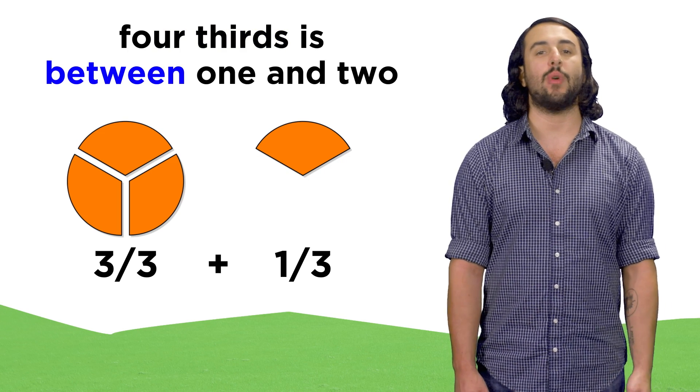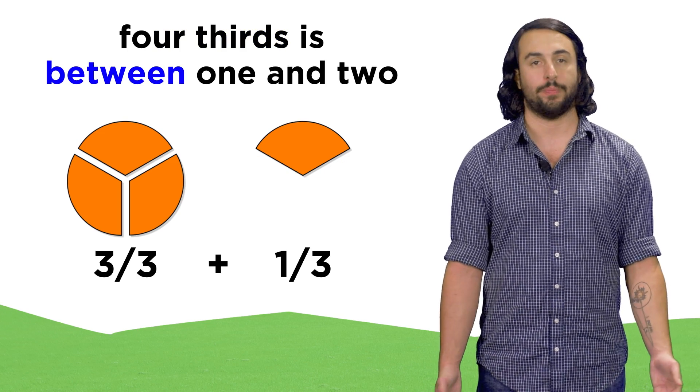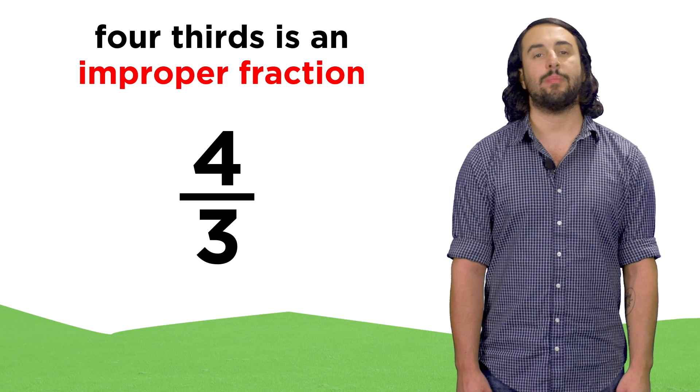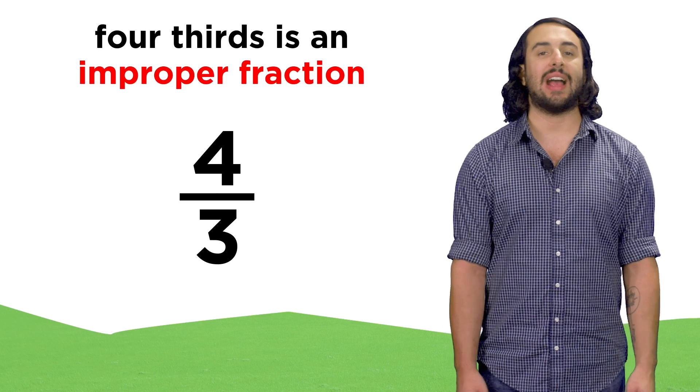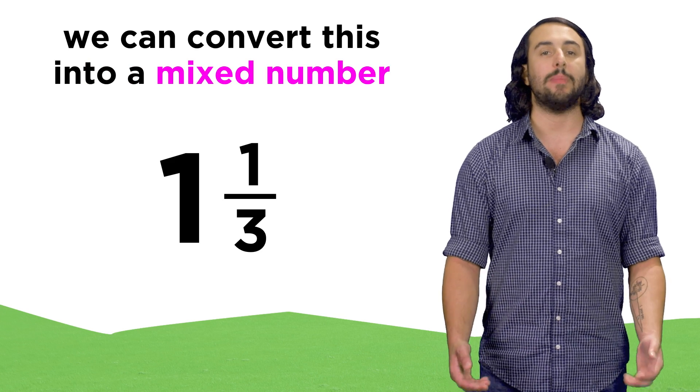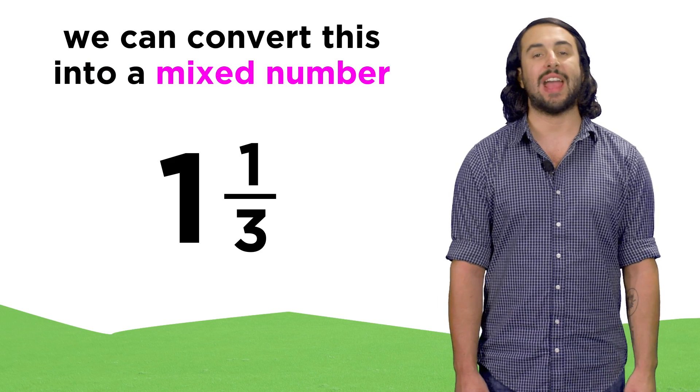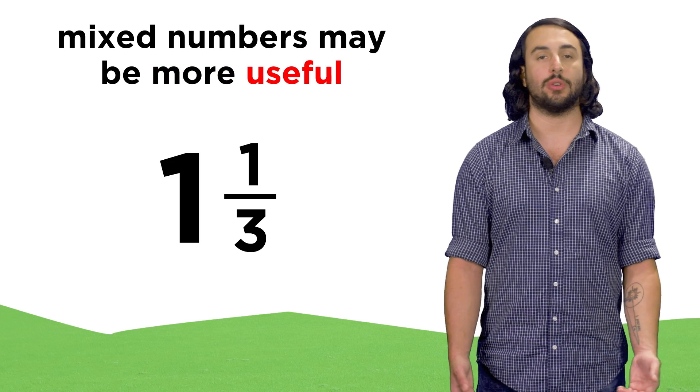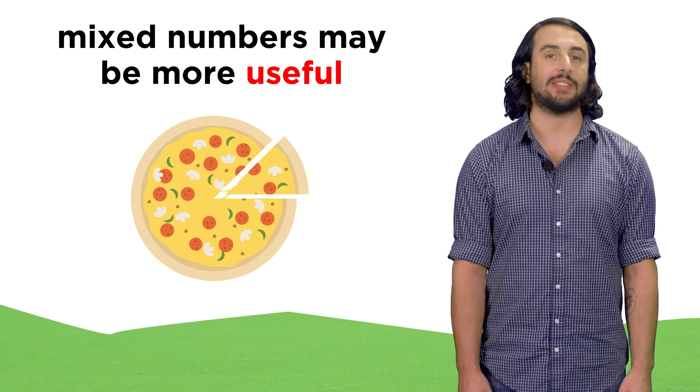So four thirds is somewhere in between one and two. These are called improper fractions, and we can either leave these as they are, or convert them to mixed numbers, like one and one third. This can be useful in a certain context, like ordering pizzas.